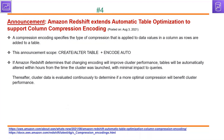The next announcement is also on Amazon Redshift. Amazon Redshift extends automatic table optimization to support column compression encoding. In Redshift, column compression type plays a crucial role in performance and storage size. When a table is created or altered with encode auto, if Amazon Redshift determines that changing the encoding will improve cluster performance, tables will be automatically altered with minimal impact to queries.